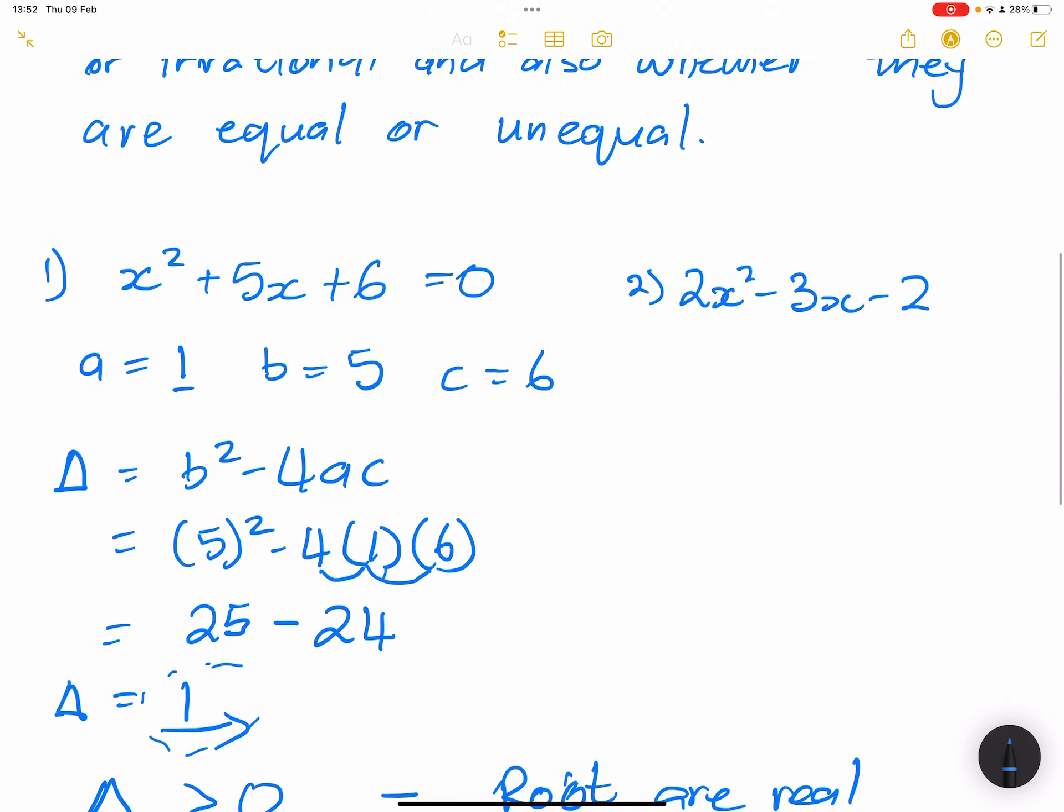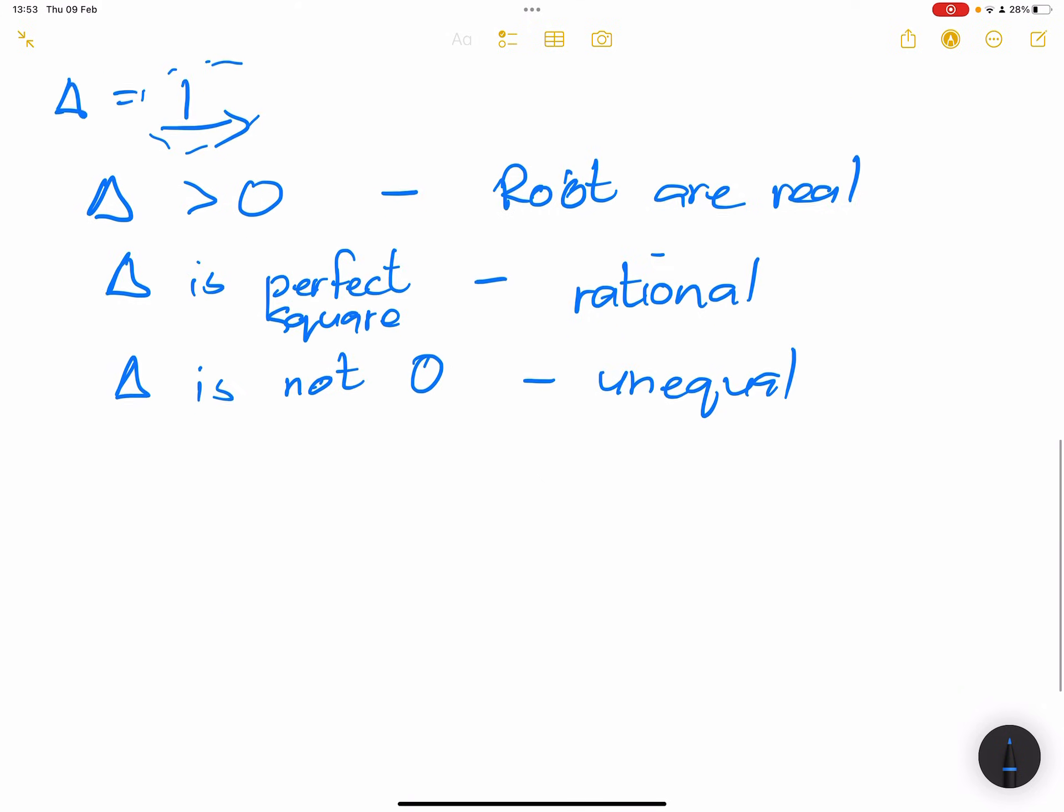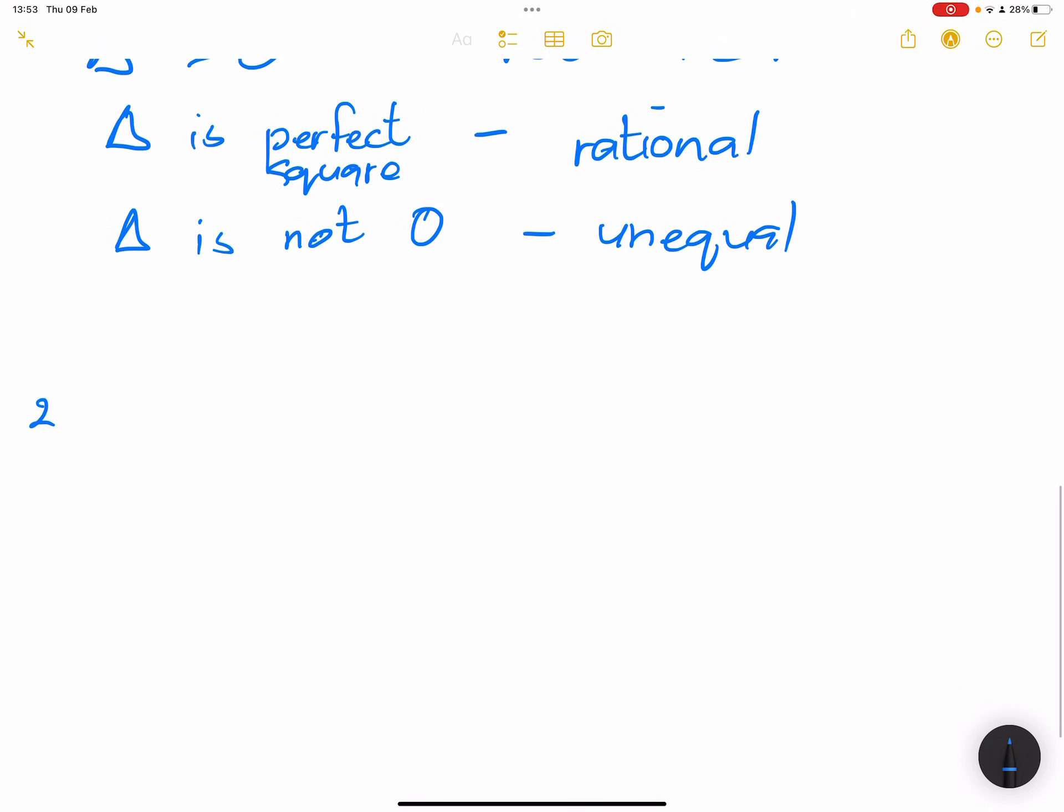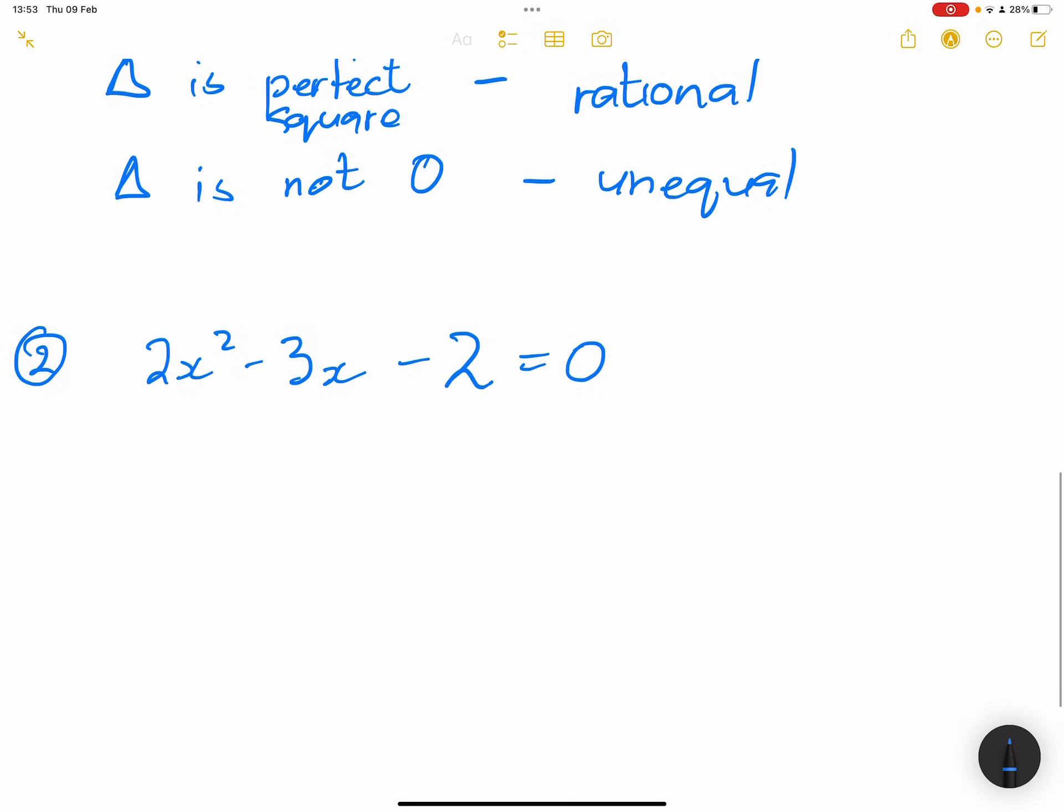Now let's take the next one. We've got 2x² - 3x - 2 = 0. Let's write that. And we are looking for the value of delta. We said that's b² - 4ac. What is our a value? It's 2. Our b value is -3 and our c value is -2.